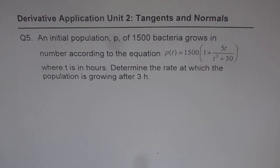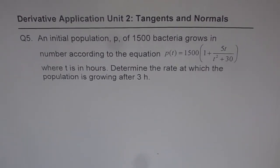Here is a practice test on unit 2, Question 5. An initial population P of 1500 bacteria grows in number according to the equation P(t) equals 1500 times 1 plus 5t over t squared plus 30, where t is in hours.